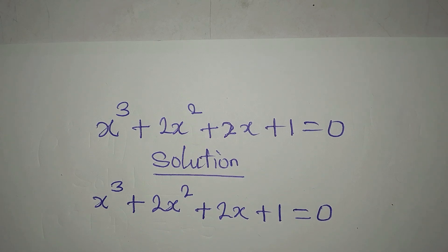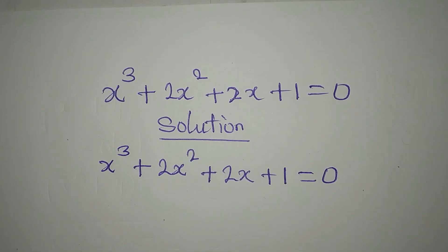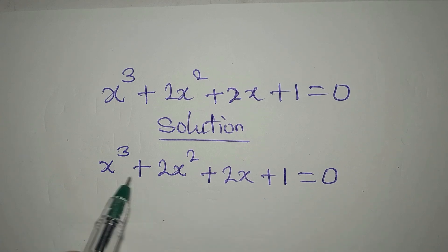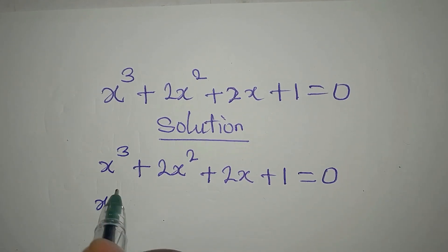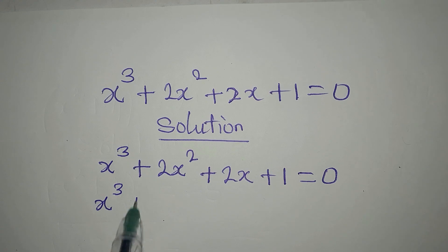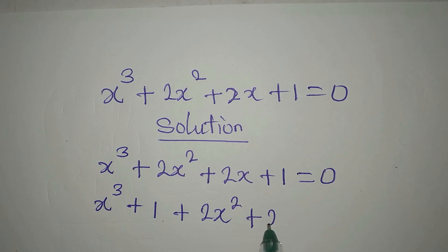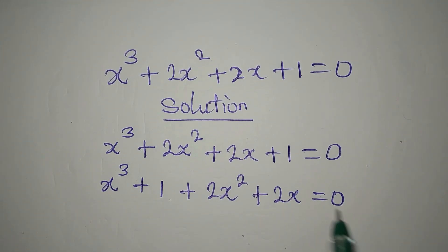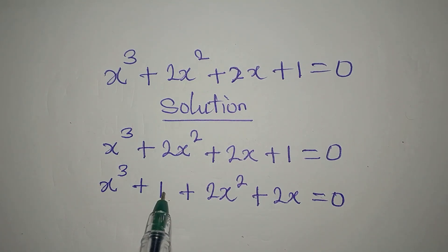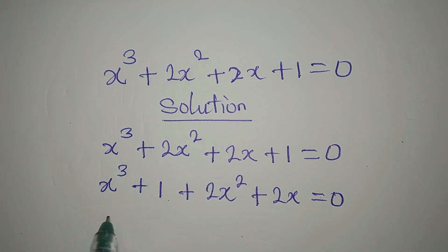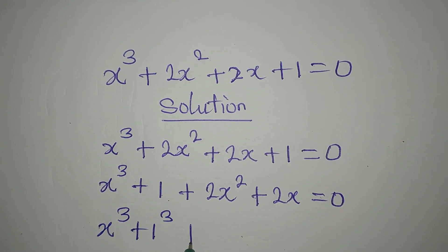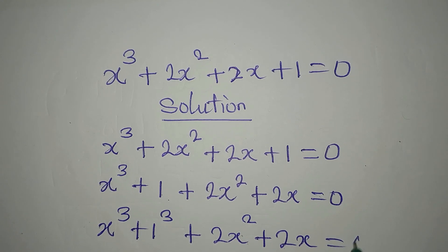Now we want to solve this problem completely. To start, let me change the position. I write x to the power of 3 plus 1 plus 2x squared plus 2x, equal to 0. What I did is bring the 1 to this side. Now I have x to the power of 3 plus 1 to the power of 3, then plus 2x squared plus 2x equals 0.